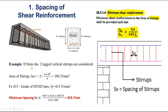If we consider 8 mm diameter two-legged vertical stirrups, the area of stirrups ASV will be 100.53 mm². If we consider the grade of steel as Fe415, then fy is 415 N/mm². By using the minimum shear reinforcement formula, the minimum spacing SV works out to 453.7 mm.